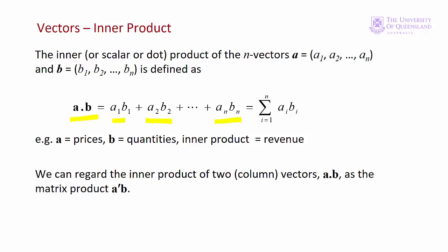A common example in economics could be a vector of prices times a vector of quantities. The inner product then is the total revenue.